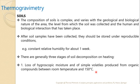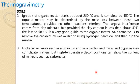There are generally three stages of soil decomposition on heating. The first is loss of hygroscopic moisture and simple volatiles produced from organic compounds between room temperature and 150°C. The second stage involves ignition of the organic matter, which starts at 250°C and is completed by 550°C. The organic matter may be determined by the mass loss between these two temperature ranges — first removing moisture content up to 250°C, then from 250 to 550°C there is loss of organic matter with complete decomposition.